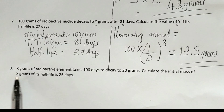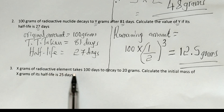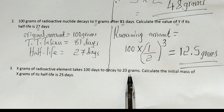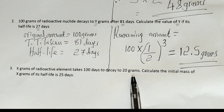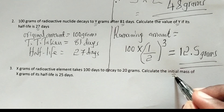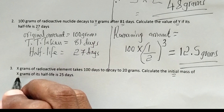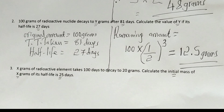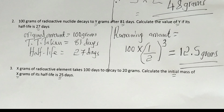You can try this one: x grams of a radioactive element takes 100 days to decay to 20 grams. Calculate the initial amount x if the half-life is 25 days. Post your answer in the comment section. For more videos, subscribe to our channel. Thank you for watching.